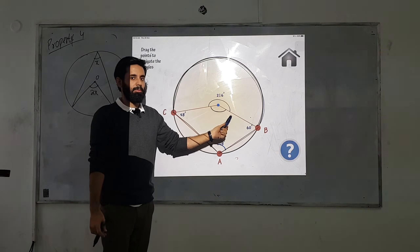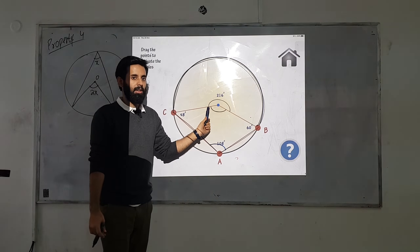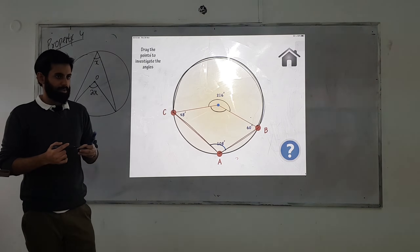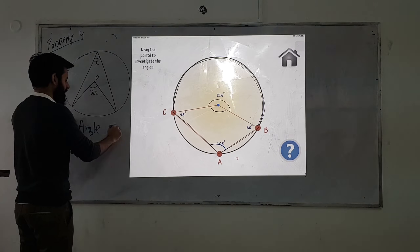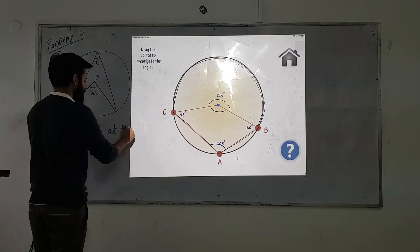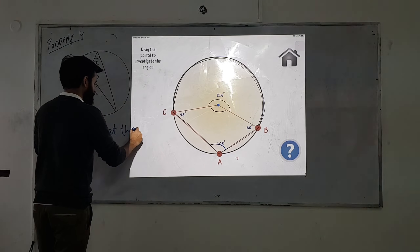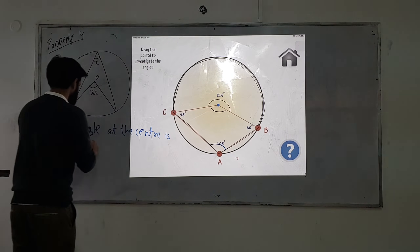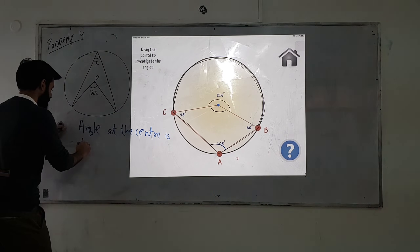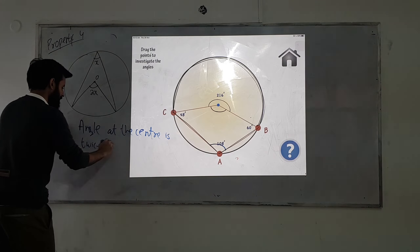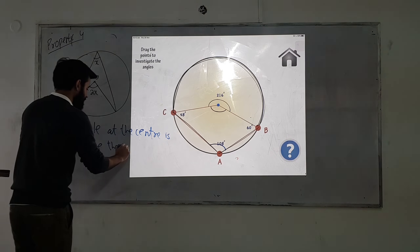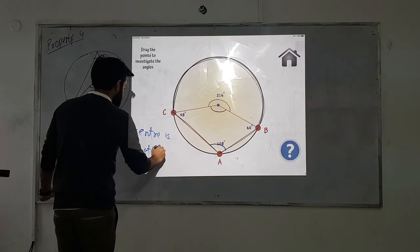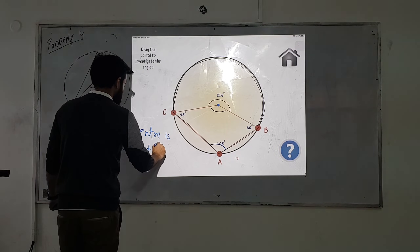So if we want to find the remaining angle, we subtract 216 from 360. Any questions? The angle at the center is twice or double the angle at the circumference.